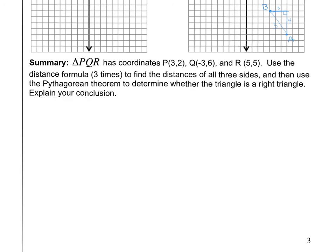Alright. For the summary, I've got a good problem for you. It says, triangle PQR has the coordinates P(3, 2), Q(-3, 6), and R(5, 5). Use the distance formula three times to find the distance of all three sides.